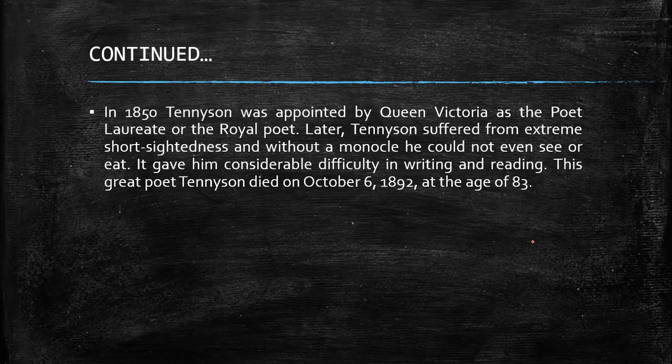Later, Tennyson also suffered from extreme short-sightedness and without a monocle he could not even see or eat, which gave him considerable difficulty in writing and reading. This great poet, Tennyson, died on the 6th of October 1892 at the age of 83. That's what you have to know about our great poet.